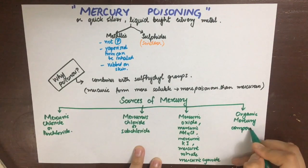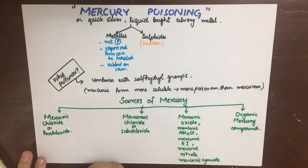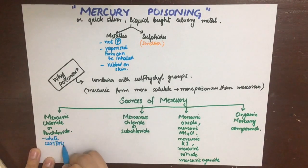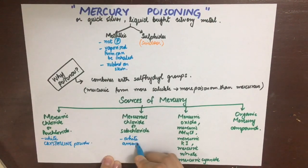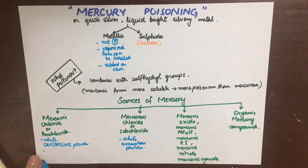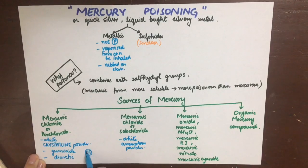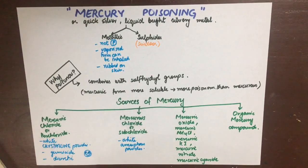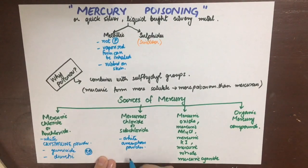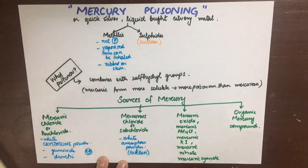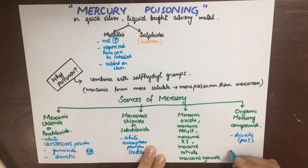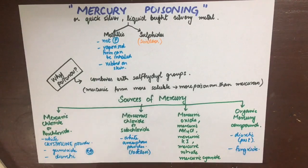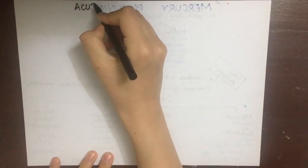One difference between mercuric chloride and mercurous chloride is that mercuric chloride is a white crystalline powder or tablet, while mercurous chloride is amorphous. Mercuric chloride is the main compound involved in acute poisoning. Organic mercury compounds were used in the past as diuretics and also as fungicides.